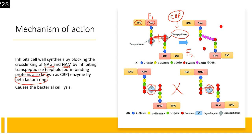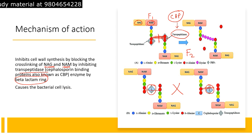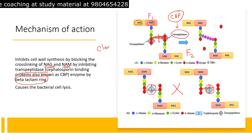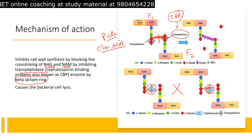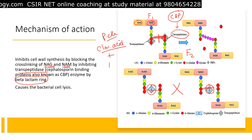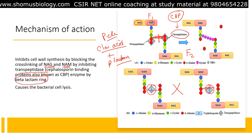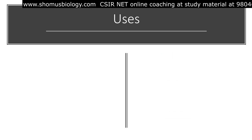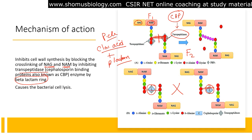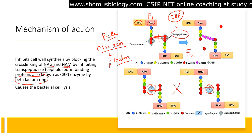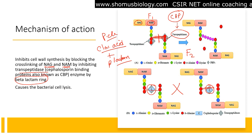Some bacteria can develop beta-lactamase enzyme, which degrades the beta-lactam ring and renders the antibiotic inactive. To prevent this, accessory compounds like clavulanic acid (potassium clavulanate) are added to inhibit beta-lactamase activity. Adding clavulanic acid alongside the beta-lactam antibiotic ensures it can still work to destroy cell wall structure by inhibiting peptidoglycan formation. For example, Augmentin is an antibiotic that carries both components.